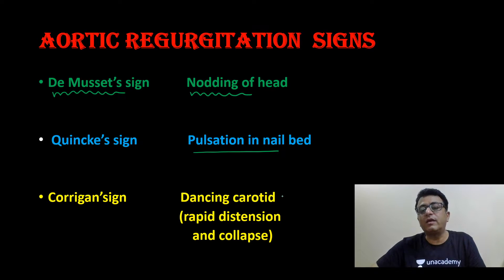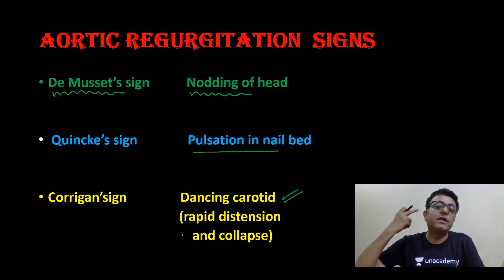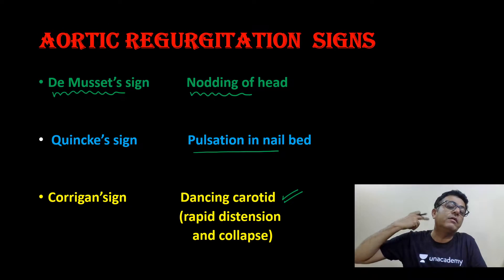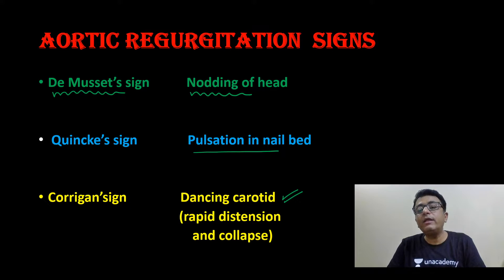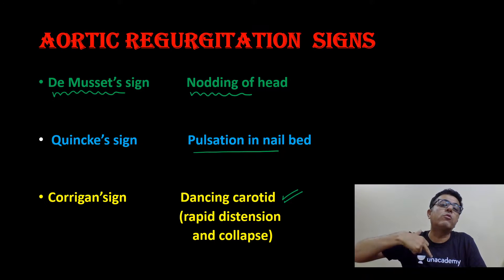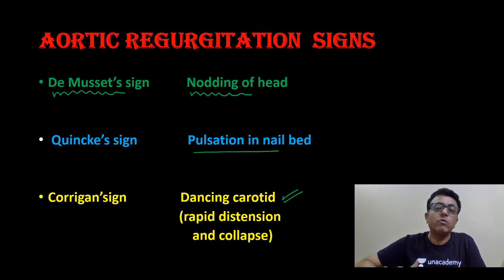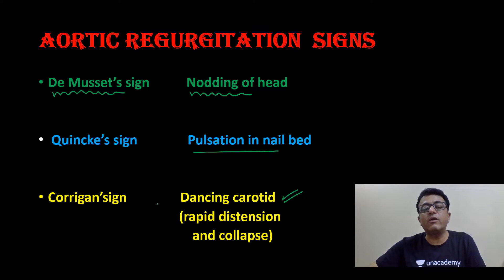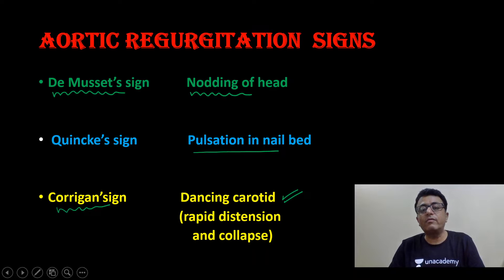Corrigan sign is the dancing carotid — rapid distension and collapse. In aortic regurgitation, the LV is volume overloaded. When it contracts, more blood goes into the carotid, so it suddenly distends. But because the aortic valve is incompetent, as soon as the LV relaxes, the whole blood comes back into the LV, causing collapse. So rapid distension and collapse of the carotid — dancing carotid — these are Corrigan signs.